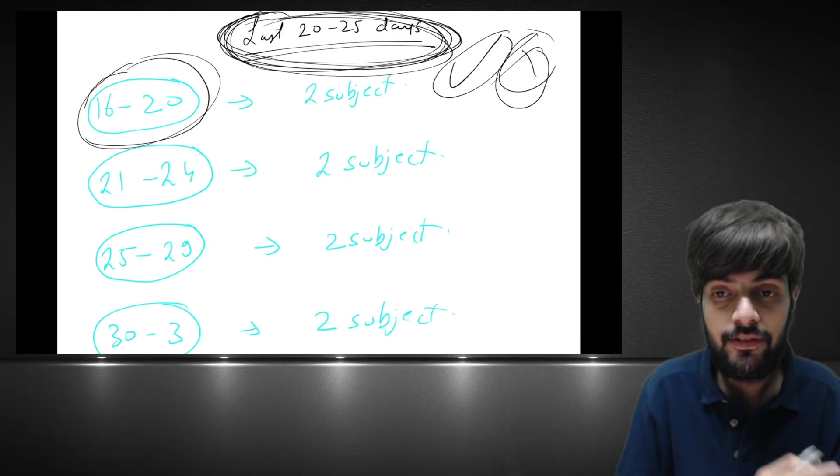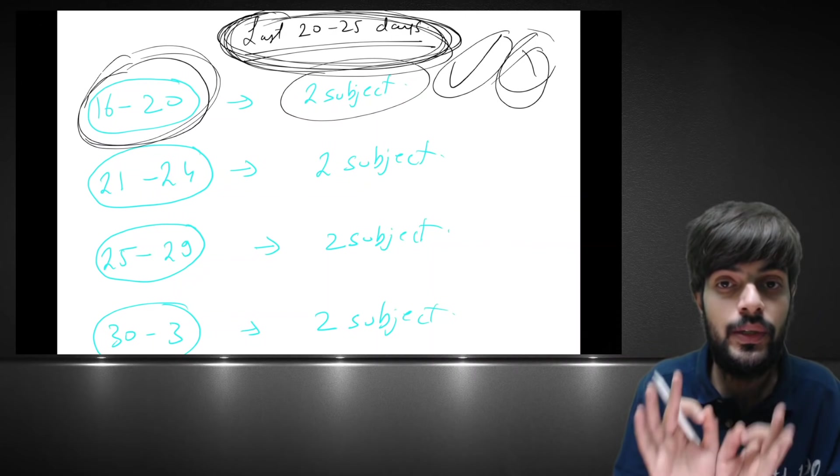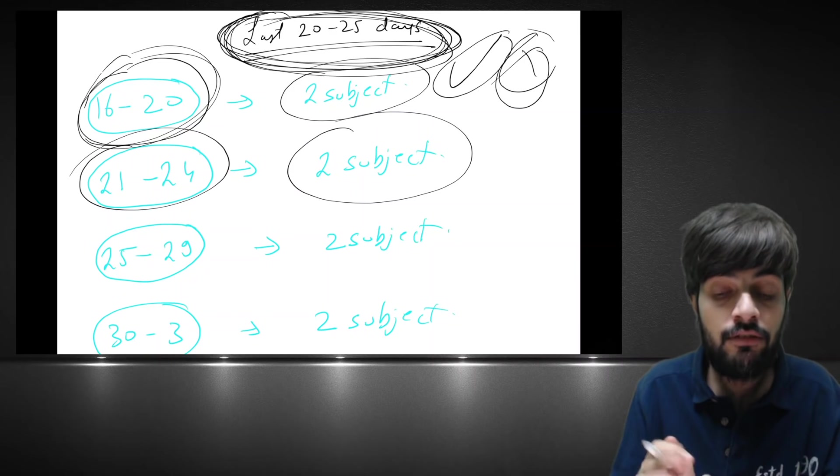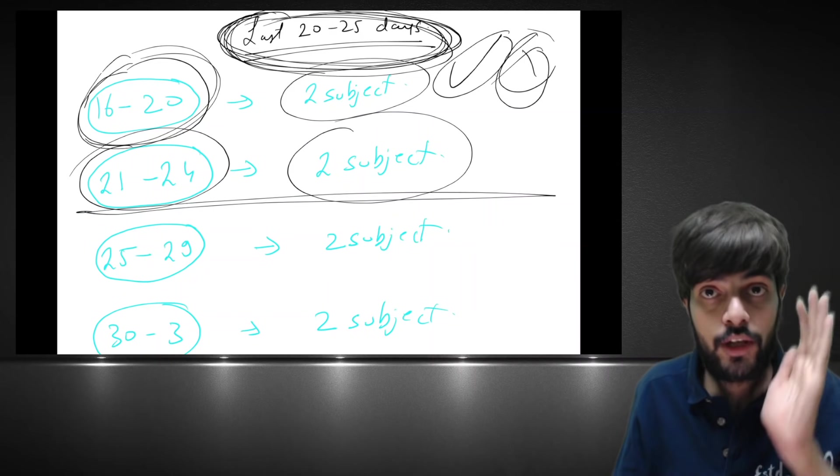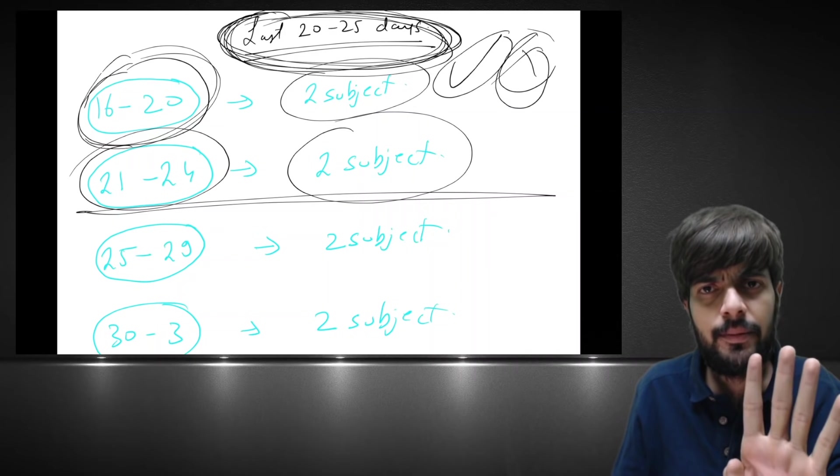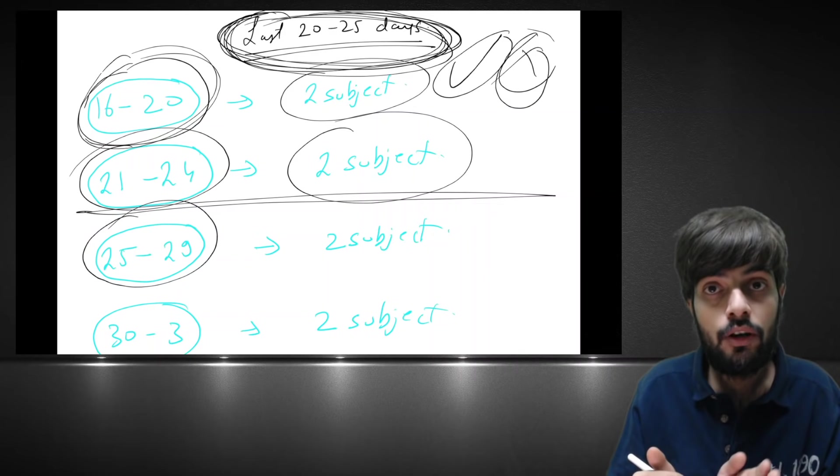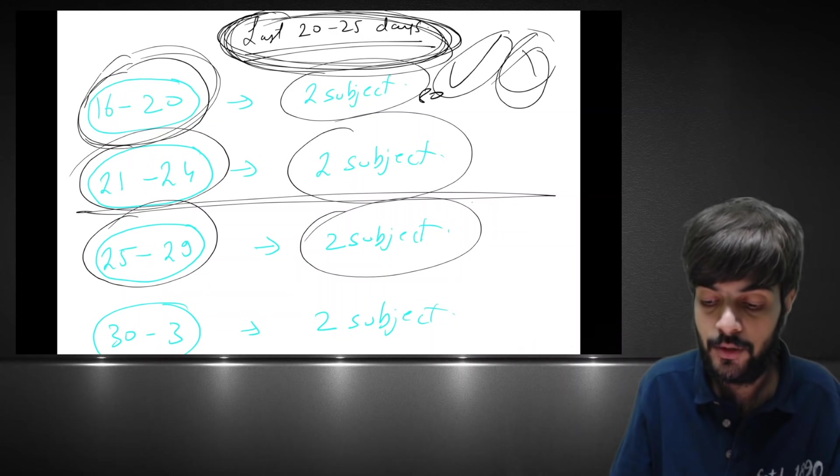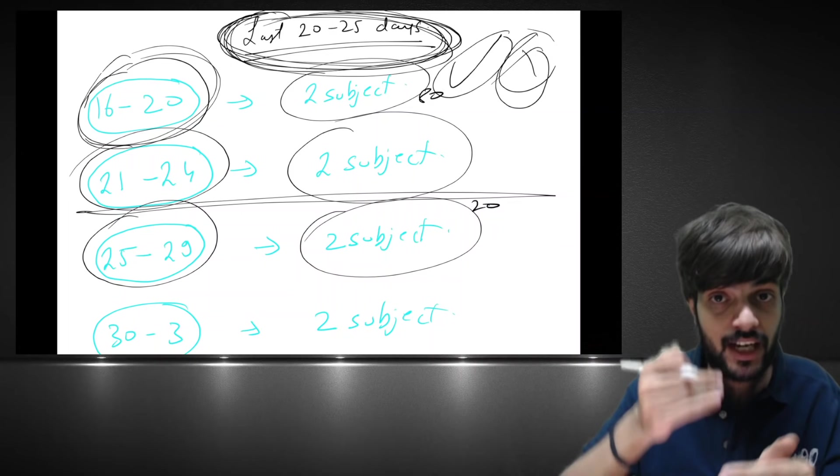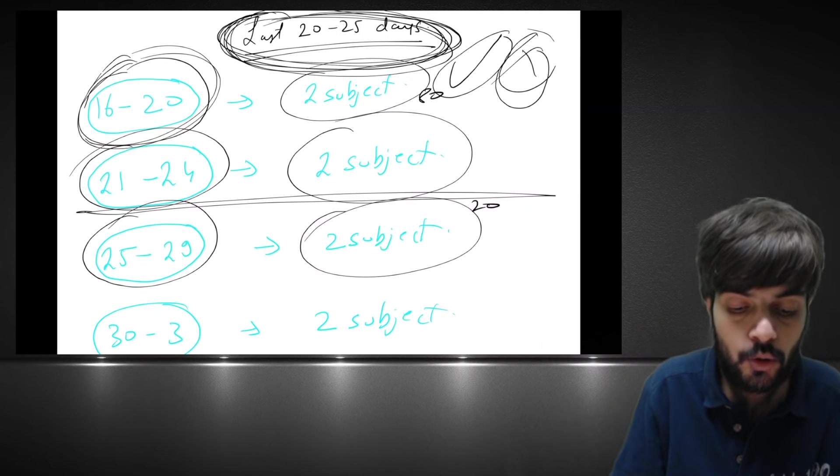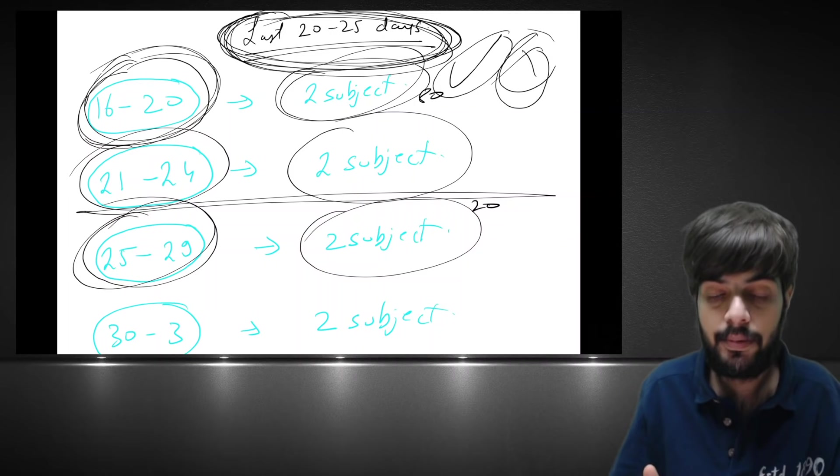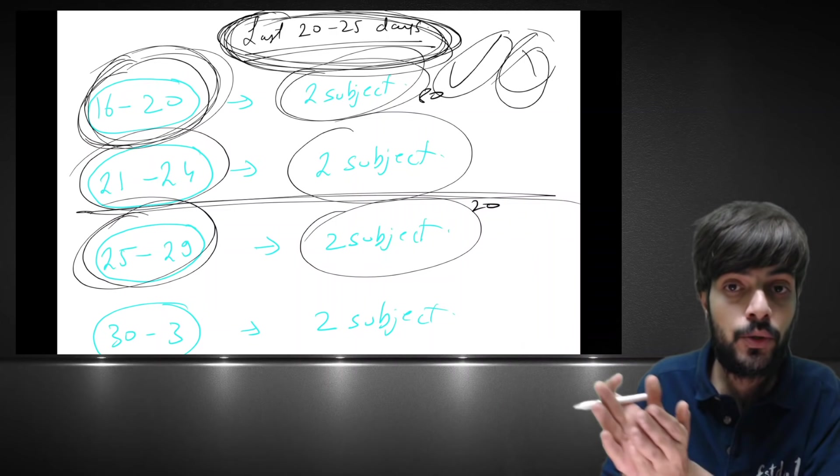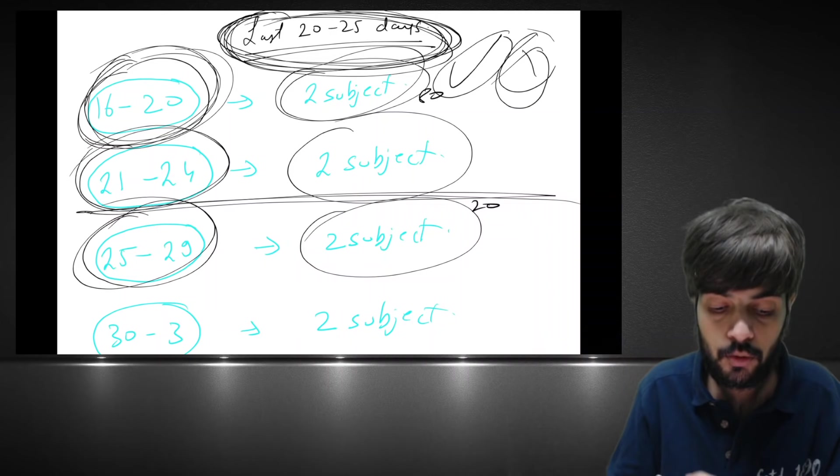Second thing I would like to tell you, today is 15th of November. You can plan 16 to 20, two subjects you will complete. Not 100% at least 80% you complete. Then 21st to 24 you again complete two subjects. So if you are giving one group then till 24th all your four subjects will be completed, 80-70%.